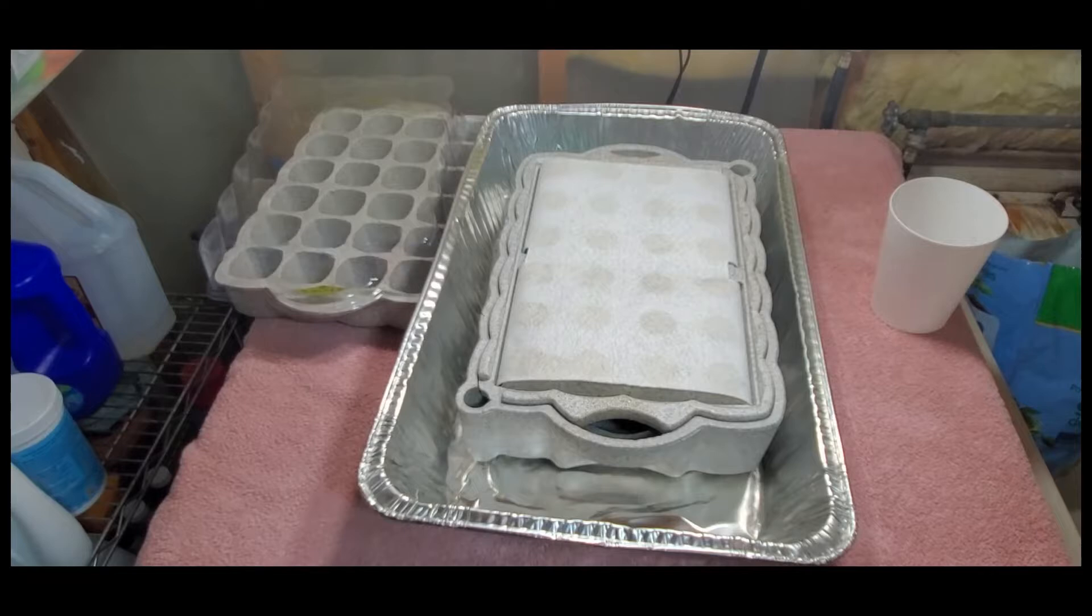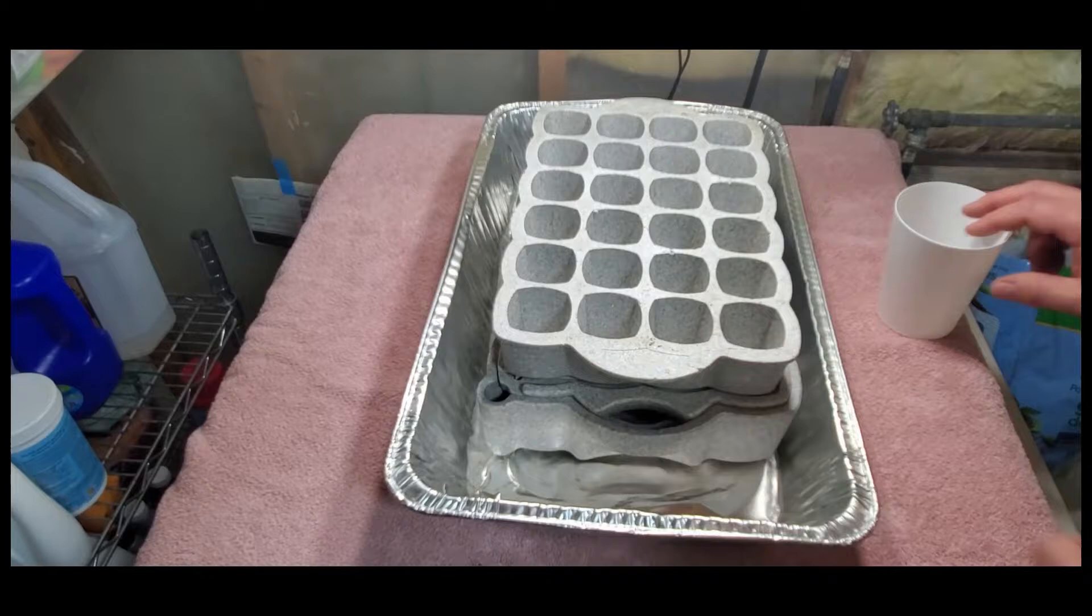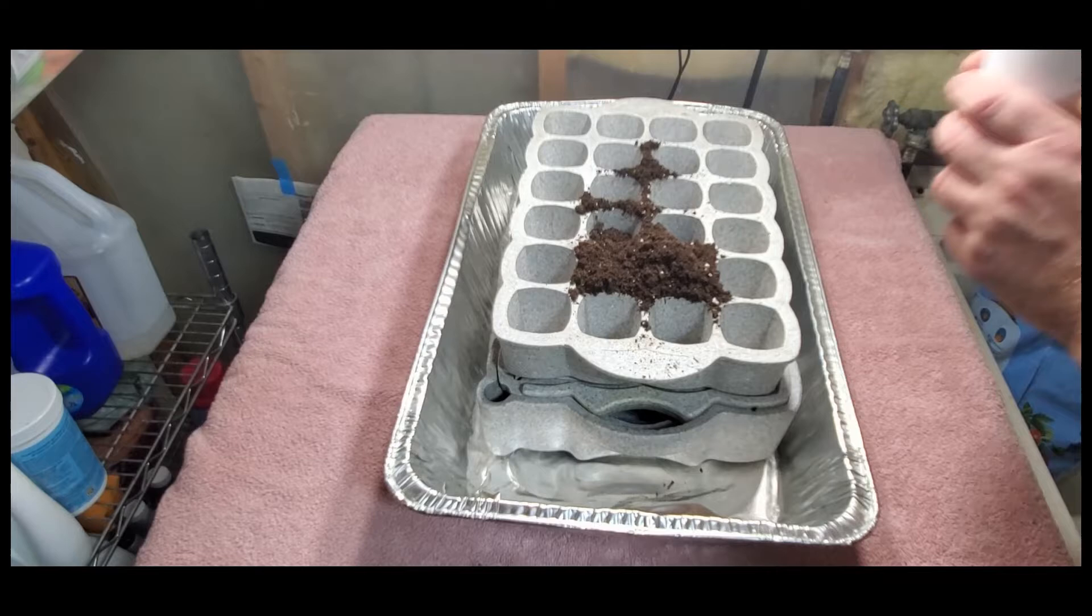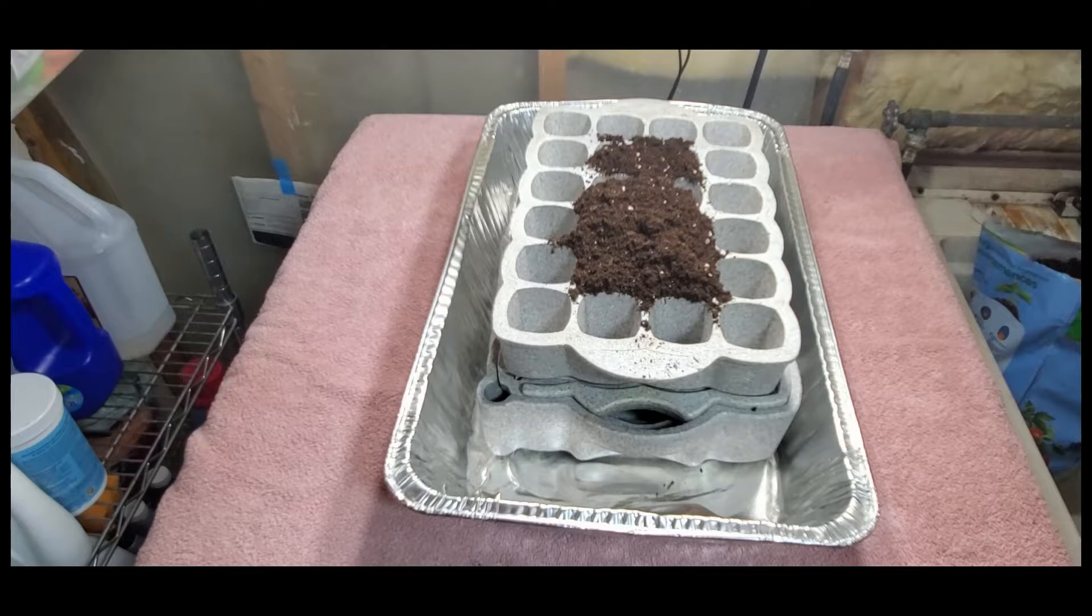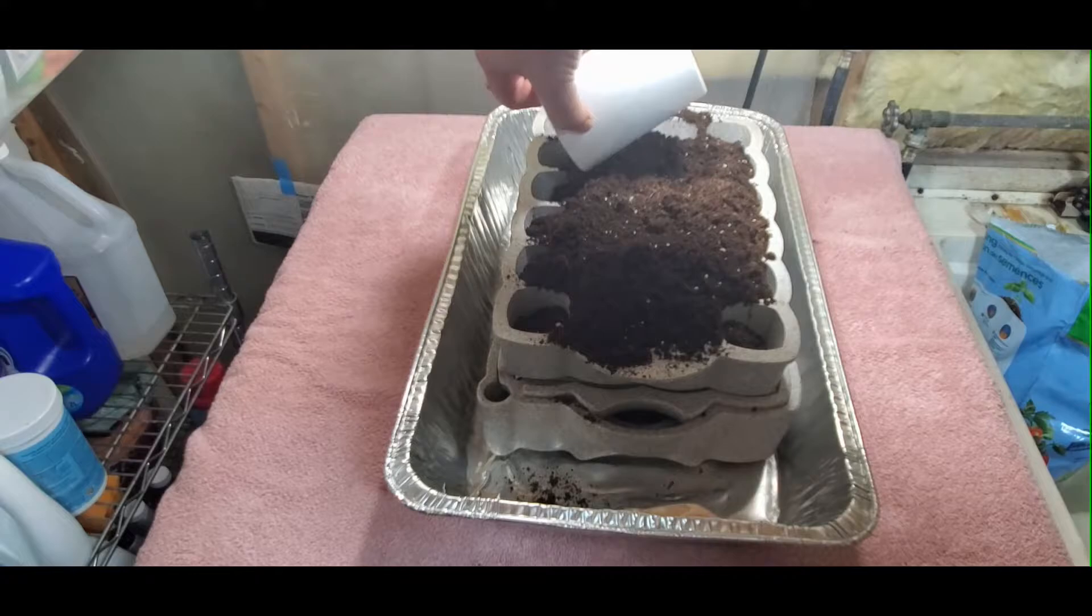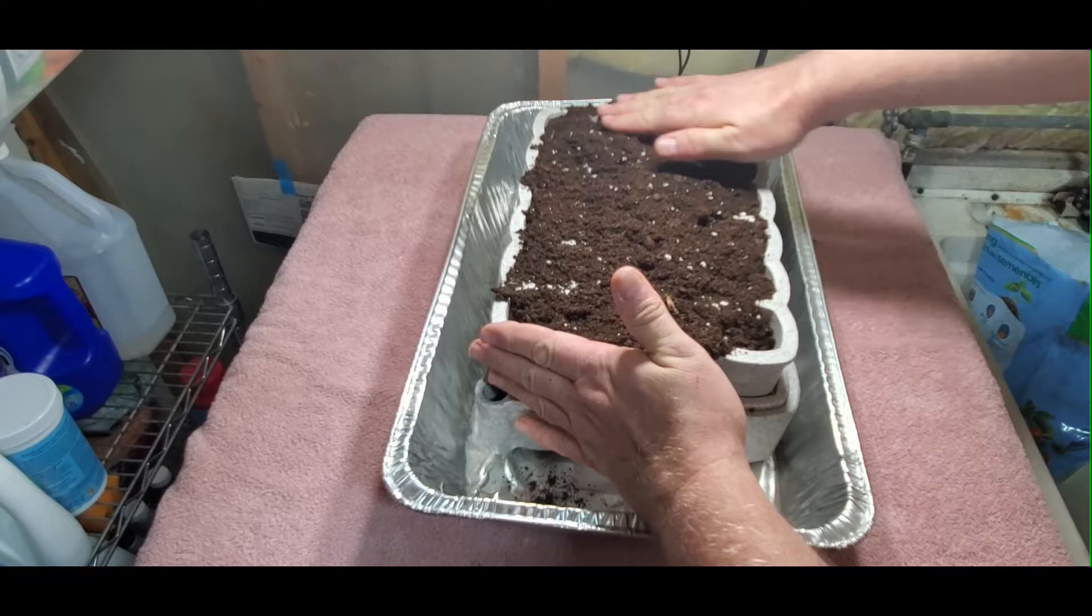The way I do it, I fill all my trays with dirt first, get that all set up before I even look at seeds. I'm filling all my trays with dirt first, getting that out of the way, and then going to the next step. That workflow works for me better, but whatever you want to do is fine. Use a potting soil, not garden soil, because when you're first starting the seed, you want something kind of light and fluffy with a little bit of vermiculite or perlite and some peat moss mixture.